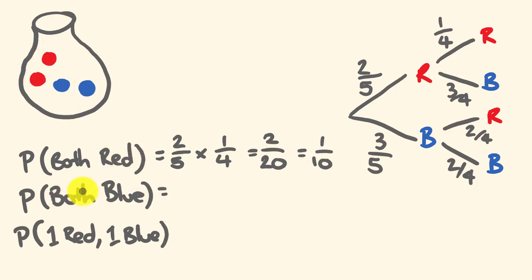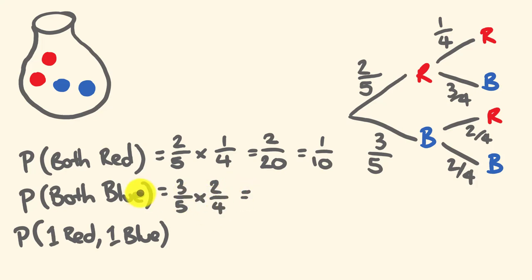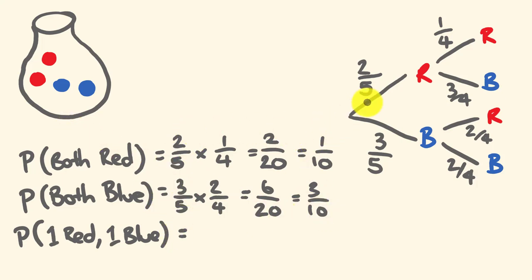For both blue, we follow that pathway: 3 out of 5 chance, then 2 out of 4 chance — we multiply those. 3 times 2 is 6, 5 times 4 is 20, and this simplifies to 3 out of 10. So that's the product rule: if you have something occurring in a series and you're trying to work out the probability of a particular pathway, you multiply.